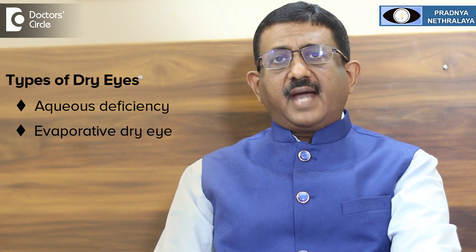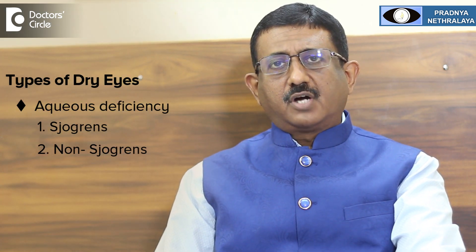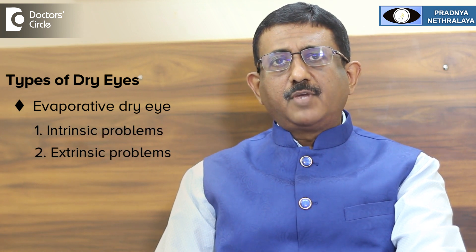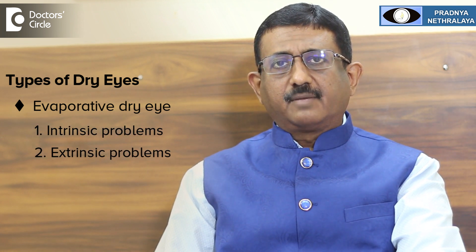Dry eyes are basically classified into two types: aqueous deficiency or the evaporative type. The aqueous deficiency type can be further classified into the Sjogren and non-Sjogren type. The evaporative type is caused by an intrinsic or extrinsic problem. The most common intrinsic problem is meibomian gland dysfunction, which will be discussed in subsequent videos.